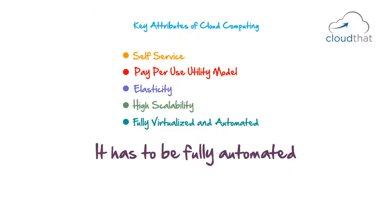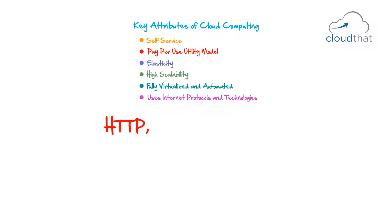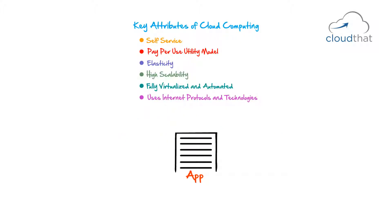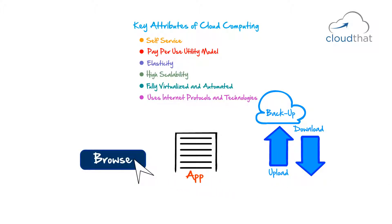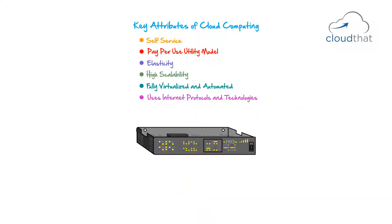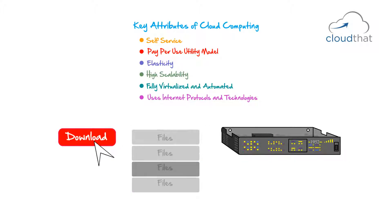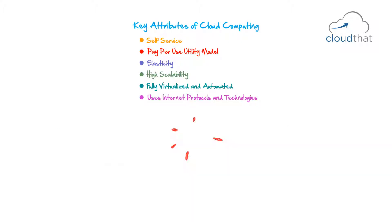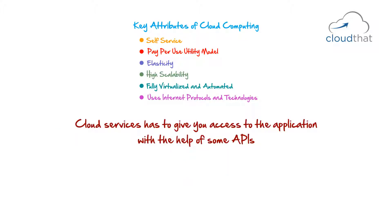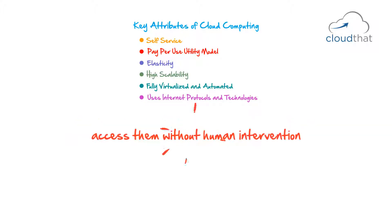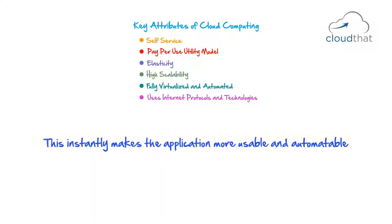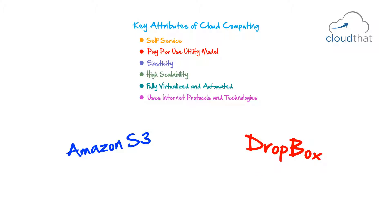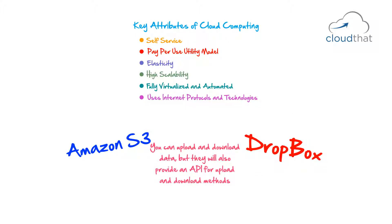Cloud services must use internet protocols and technologies such as HTTP, REST, SOAP, etc. Consider an application that lets you upload and download files for backup. Beyond the manual UI-driven approach, cloud services must give you access via APIs so you can interact without human intervention. This makes the application more usable and automatable. Amazon S3 and Dropbox, for example, not only provide a UI for upload and download, but also provide an API with upload and download methods.